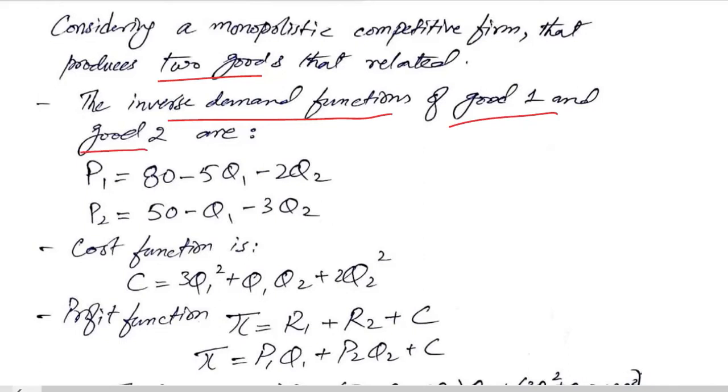That is, the inverse demand function for the first good will be dependent upon the output of both, dependent upon the demand of both. And again, the price of the second commodity would be a function of the demand for both of the goods because they are related goods.